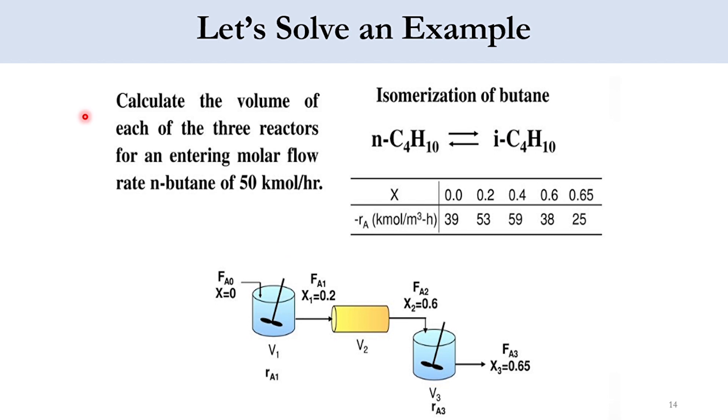Let's solve an example: calculate the volume of each of the three reactors for an entering molar flow rate of n-butane of 50 kmol per hour. The reaction that takes place is normal butane converts to isobutane in a reversible system. For each conversion, the rate of reaction is given.